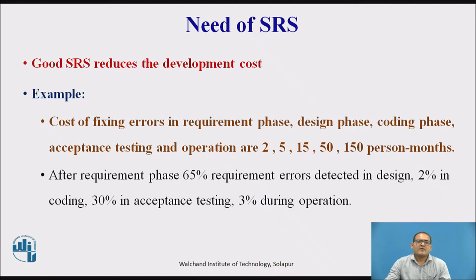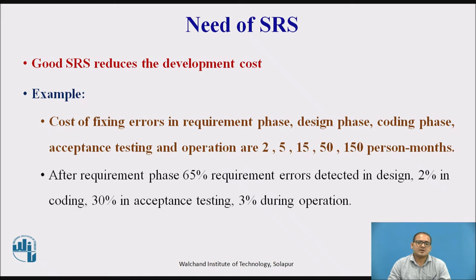After the requirement phase, 65 percent of requirement errors are detected in the design phase, 2 percent in coding, 30 percent in acceptance testing, and 3 percent during operation. These are the requirement errors detected after the requirement phase, which is followed by design, coding, testing, and maintenance phases.